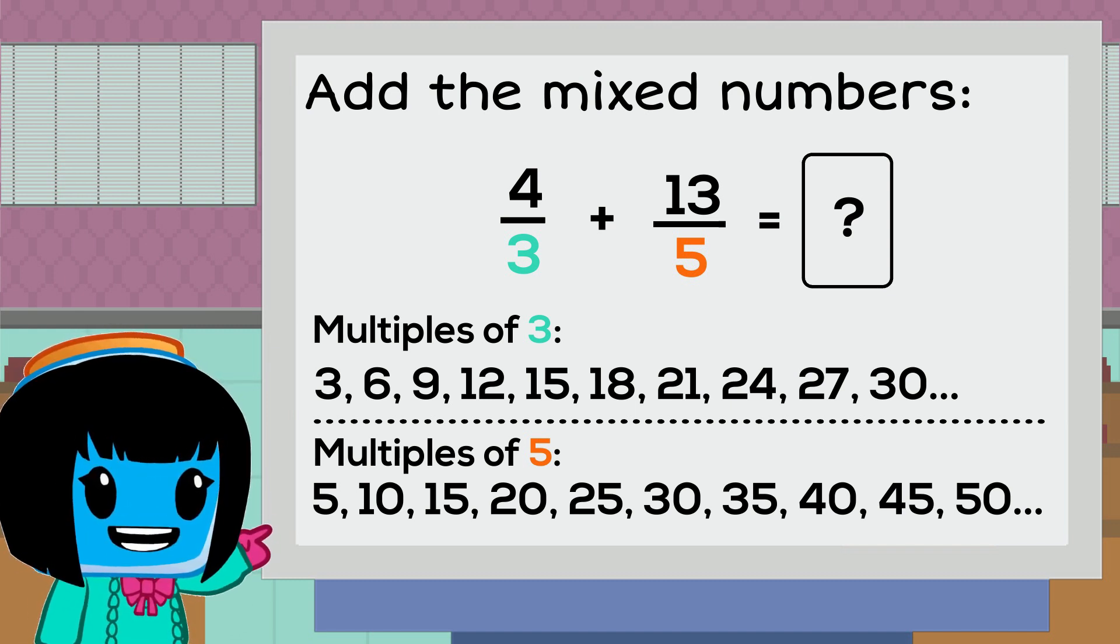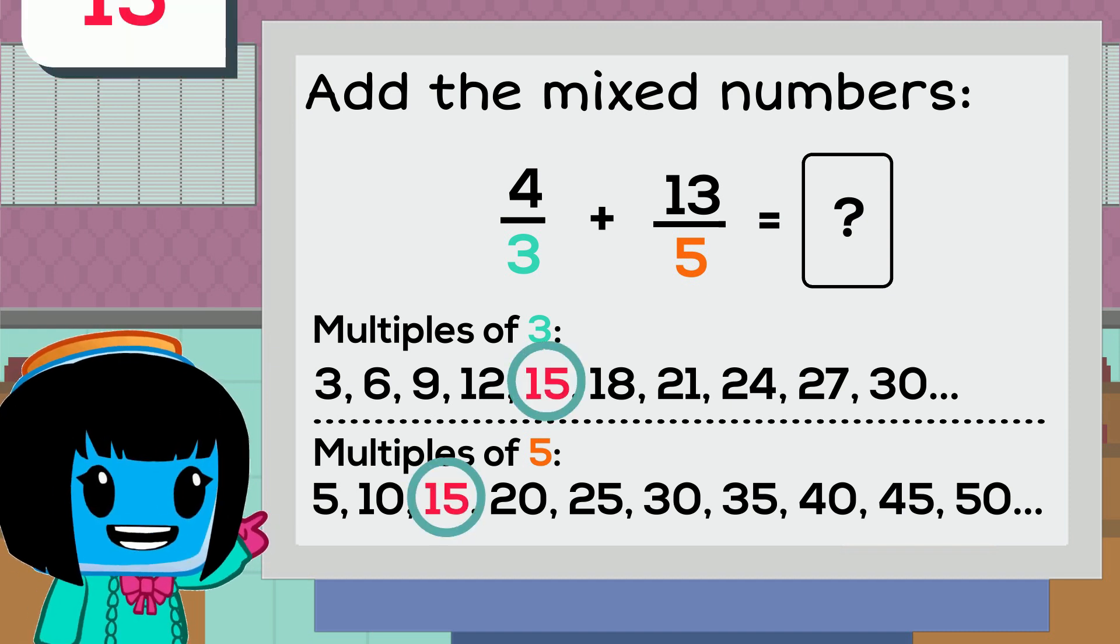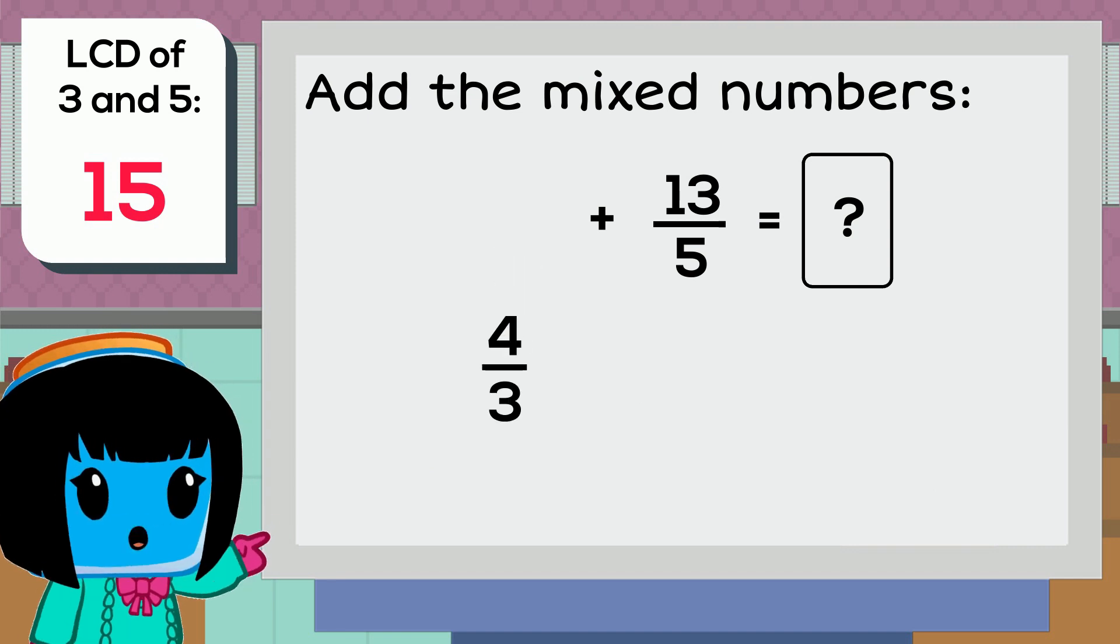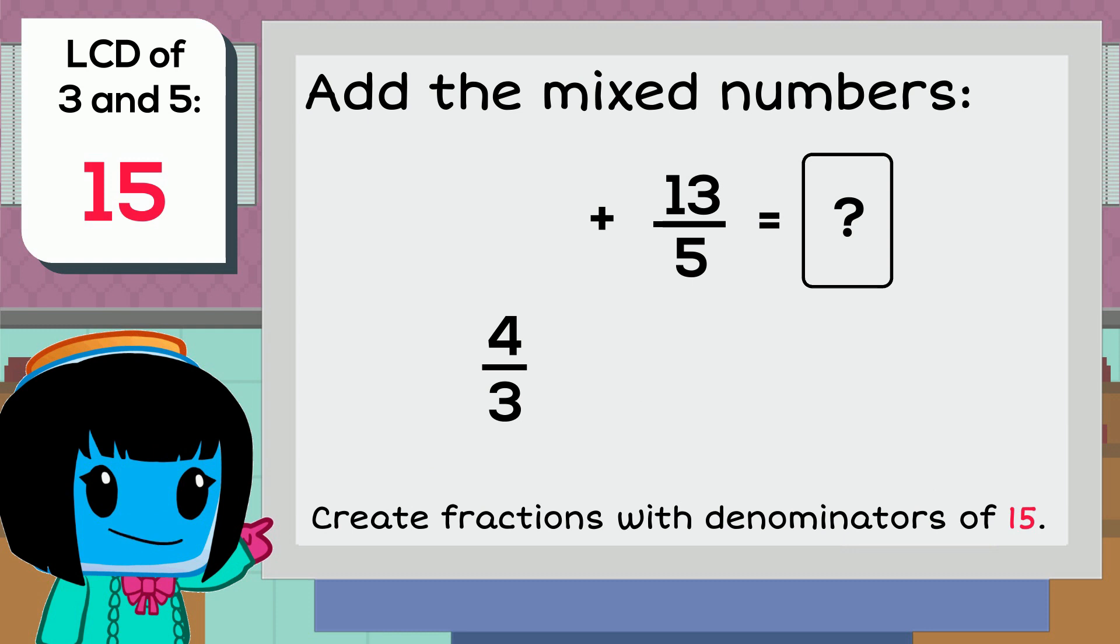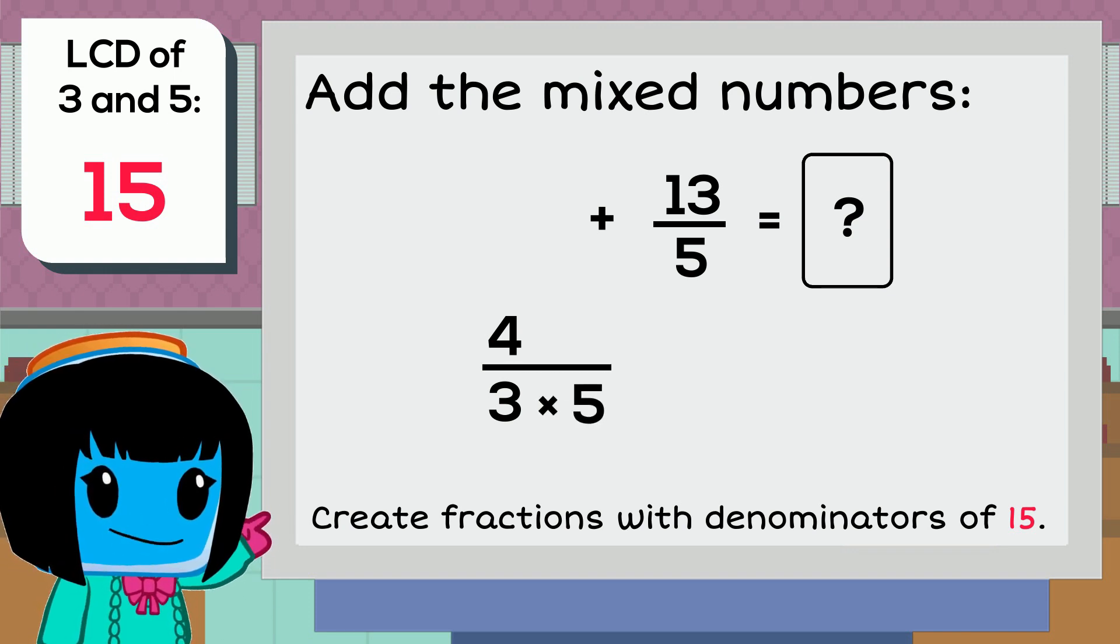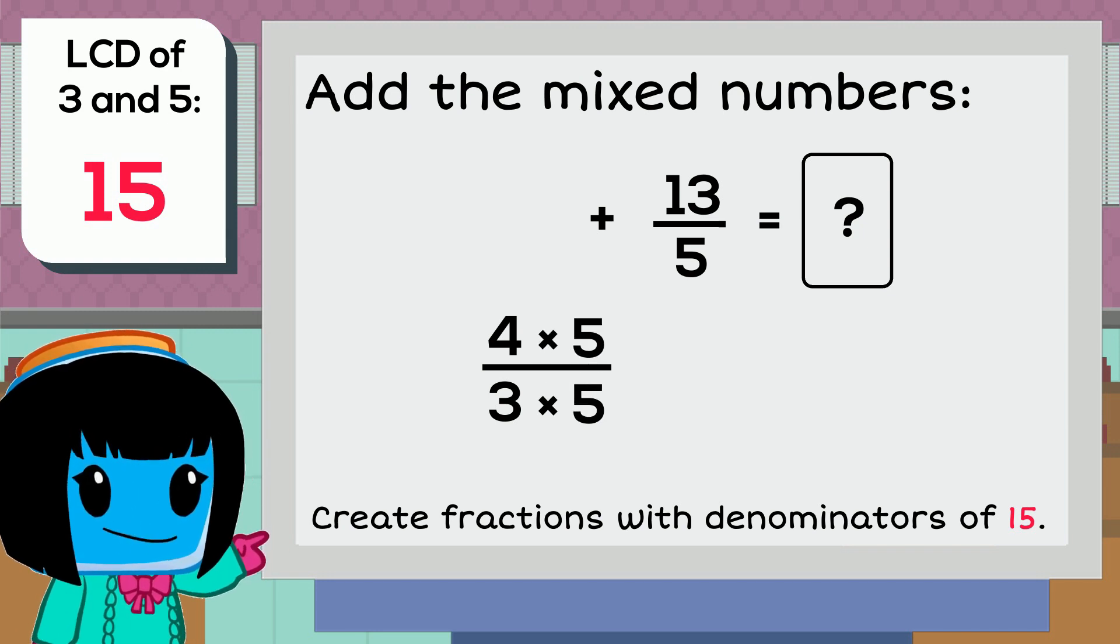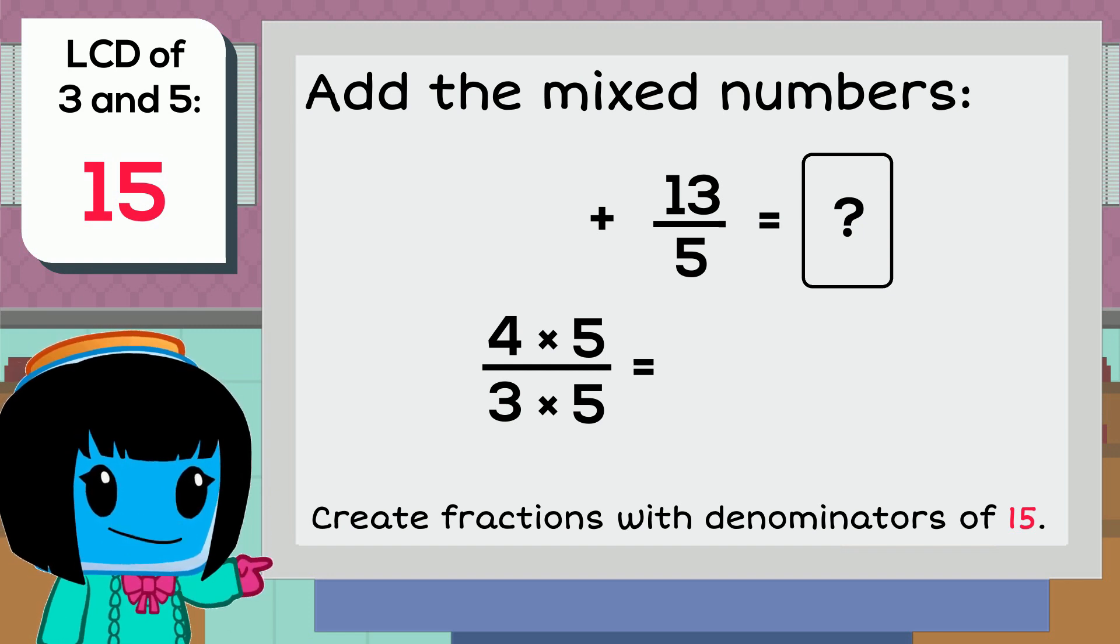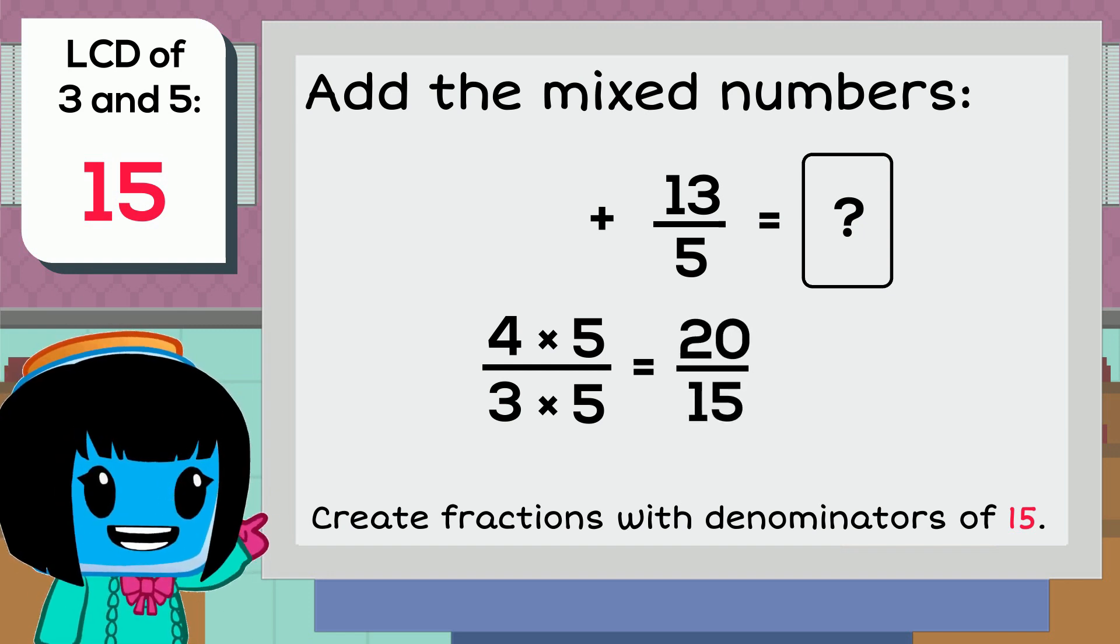From this list we see that the lowest common multiple of 3 and 5 is 15. Starting with the first improper fraction, 4 thirds, we're going to create an equivalent improper fraction using a denominator of 15. To create a denominator of 15, we multiply 3 by 5, and whatever we do to our denominator, we must do to our numerator. So we're going to multiply 4 by 5 as well. This gives us 20 fifteenths.